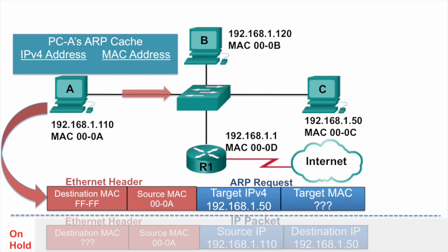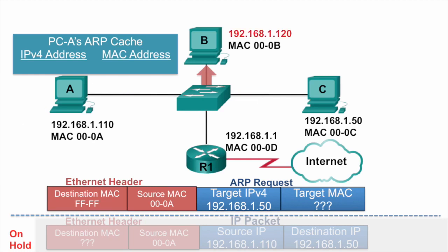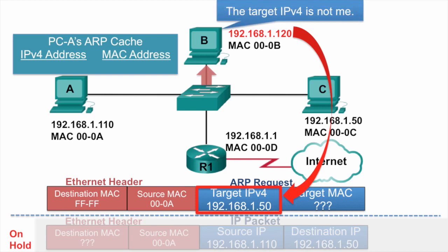So PCA sends it to the switch. Because it is a broadcast, the switch will flood it out all ports except for the port that it came in on. PCB receives the broadcast, so it must process it. Its ARP process examines the ARP request and compares its own IPv4 address against the target IPv4 address, and notices that they are not the same. So it doesn't need to send an ARP reply.